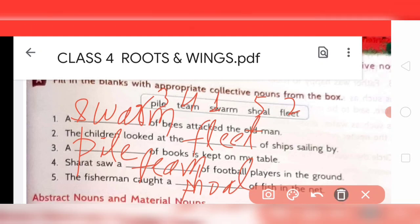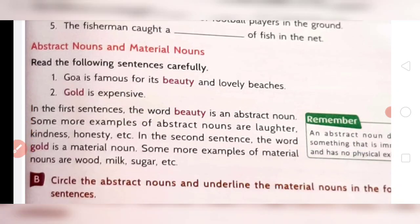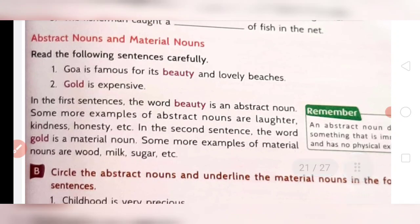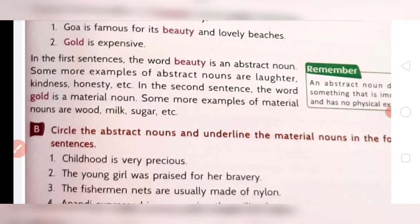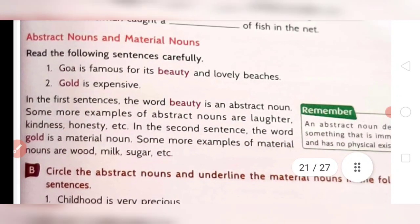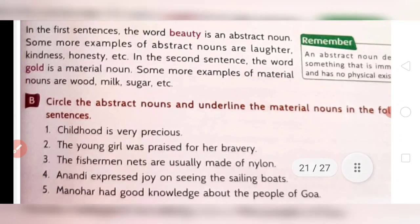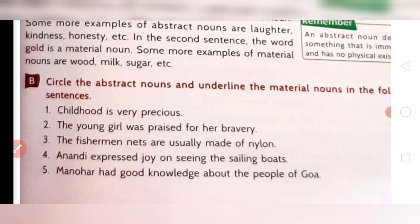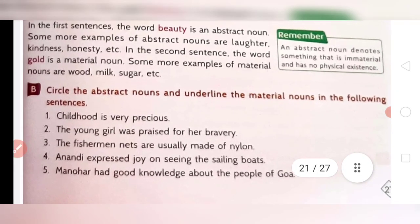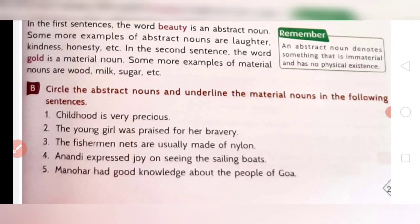Now we move to abstract nouns and material nouns. Question number B: circle the abstract nouns and underline the material nouns in the following sentences. Abstract nouns are invisible — you can just feel them. For example, honesty: you can't see it or touch it, but you can feel it. Childhood is another example. Material nouns are things you can make something else from — for example, wood: you can make furniture from it. Oil, sand, cement, paper are all material nouns. Material nouns have physical existence — you can see and touch them.